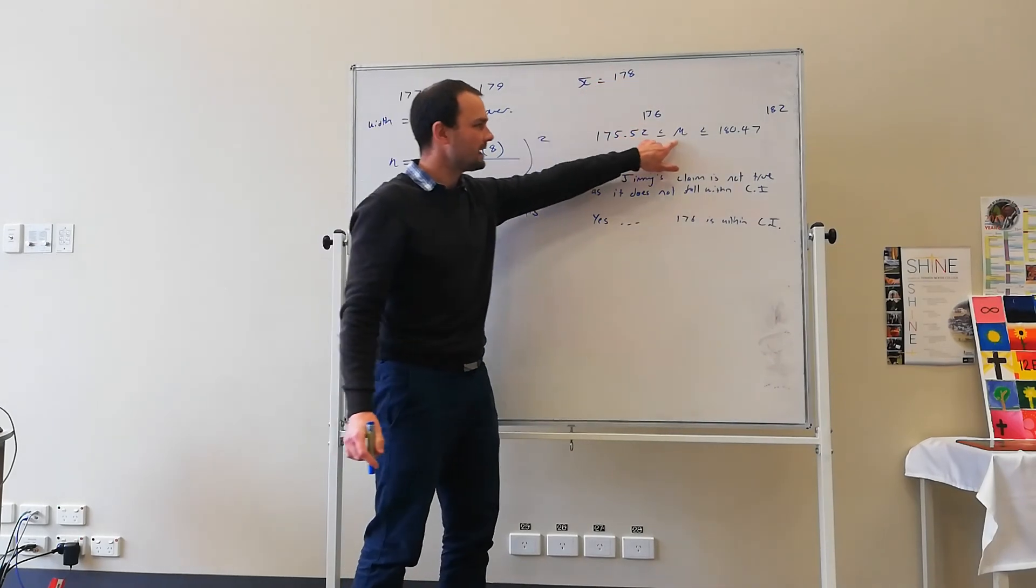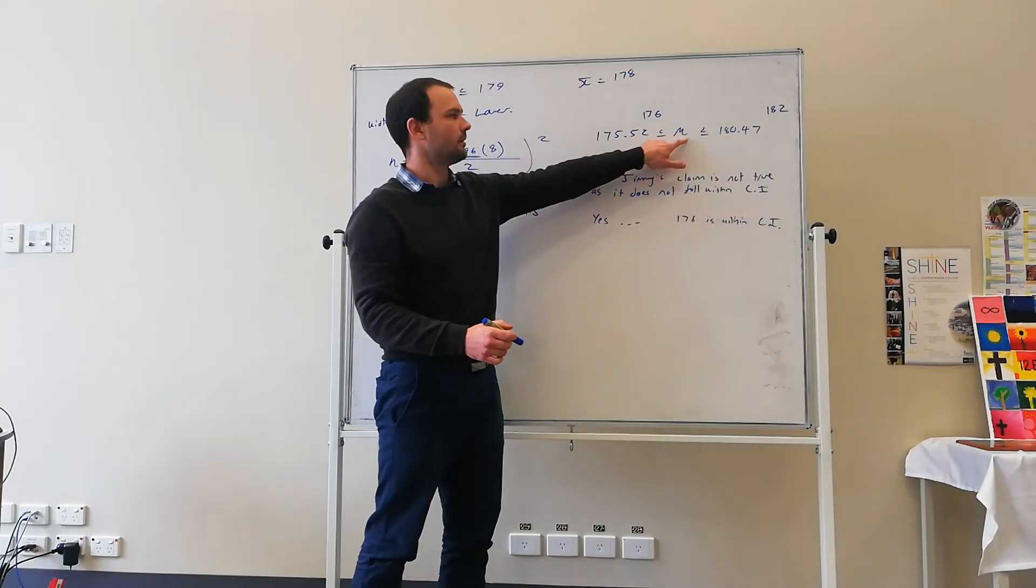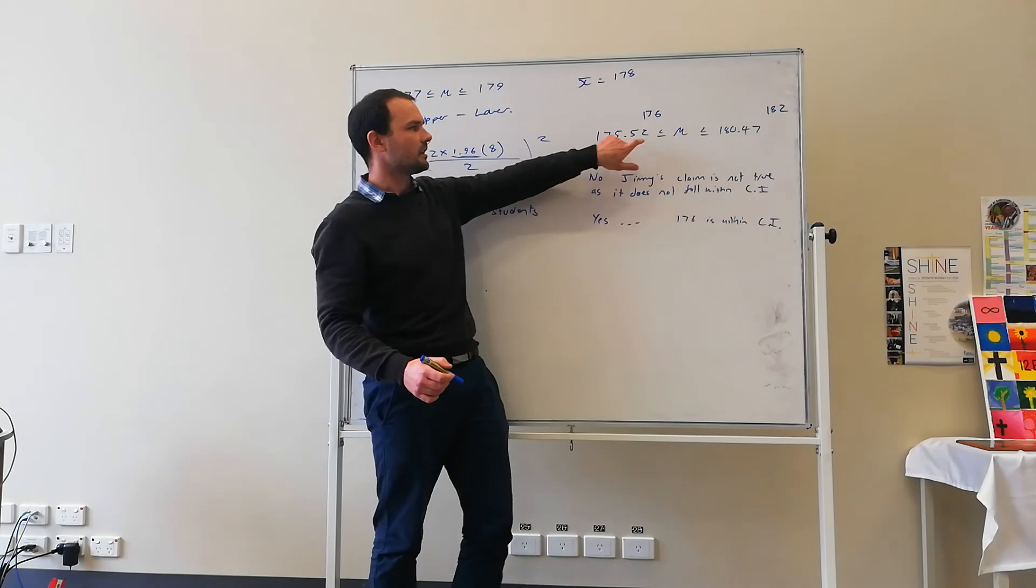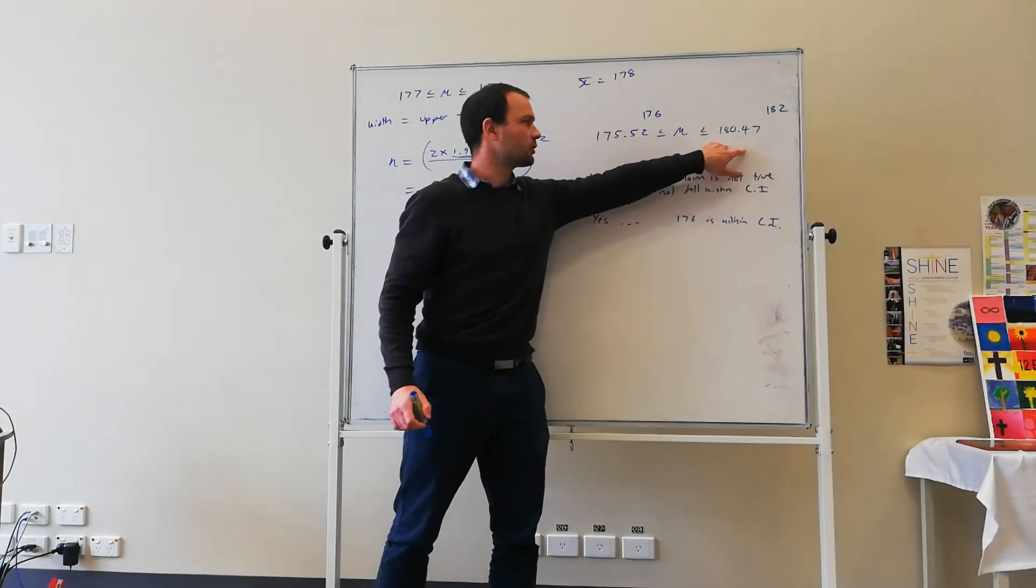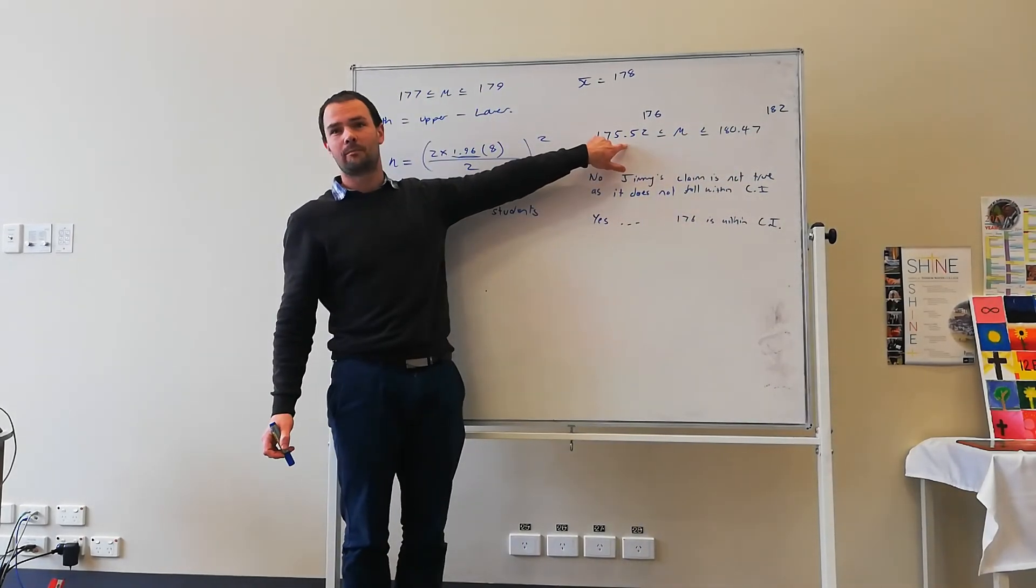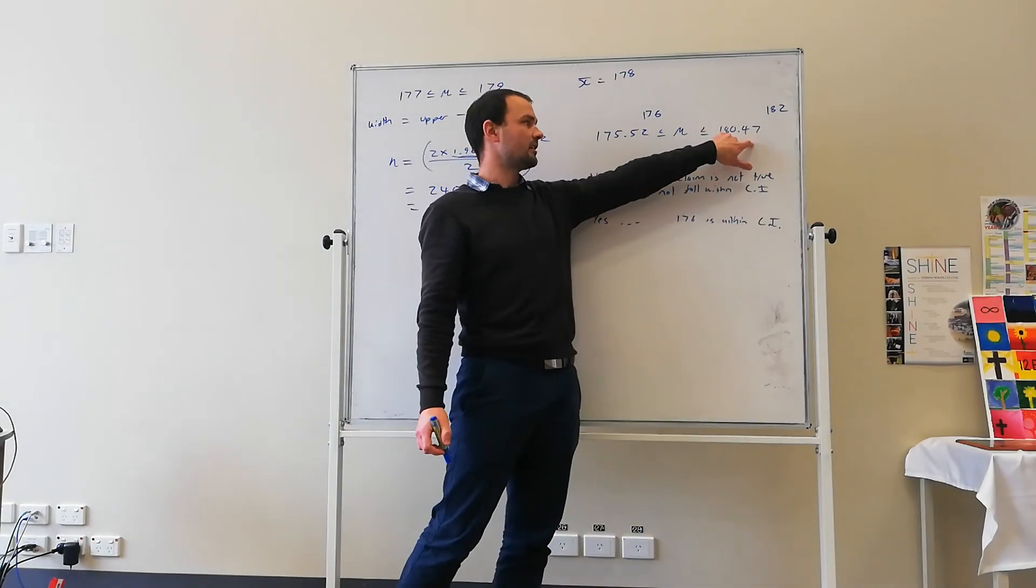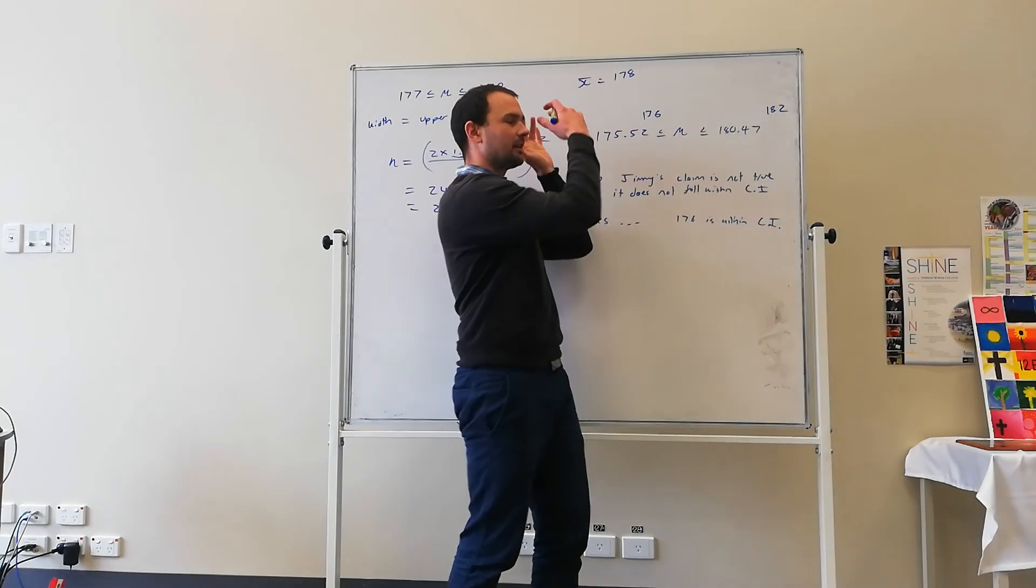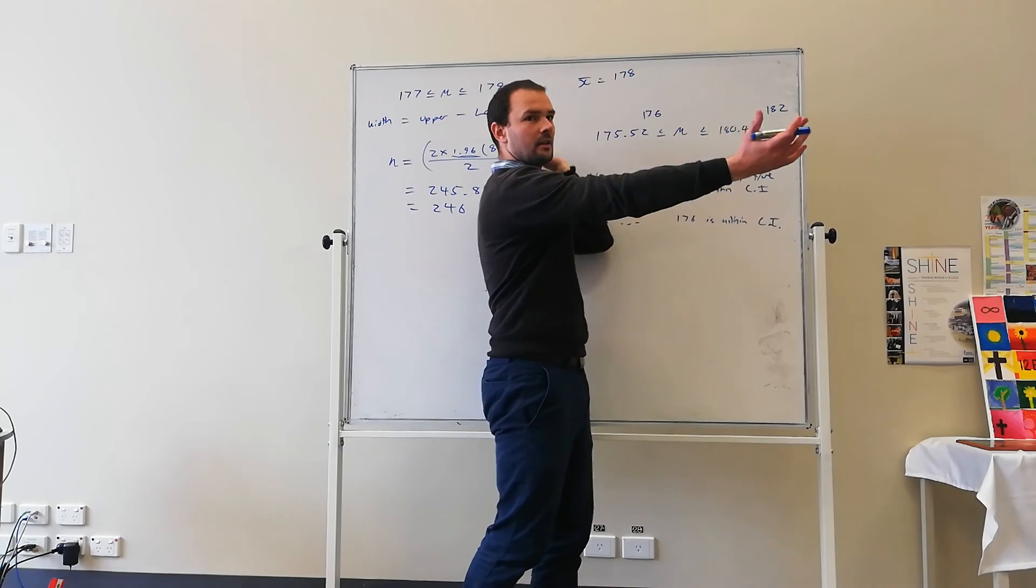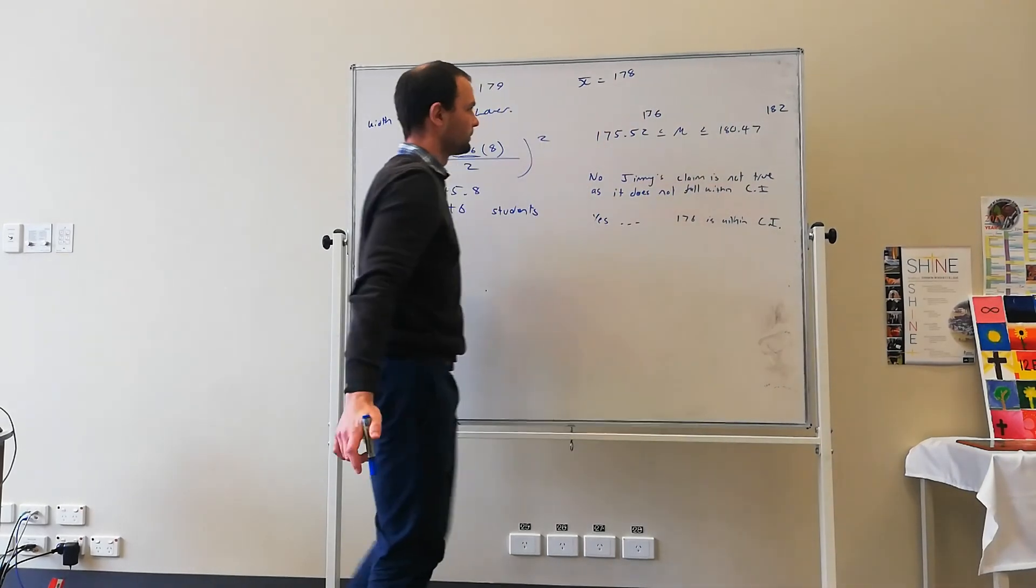And so we're saying, based on these results, the mean of the population. Okay? Remember mu is mean of the population. Is somewhere in this interval. Which means it could be as low as 175.52. It could be as high as 180.57. But anything outside that boundary is false. Anything within that boundary is true.